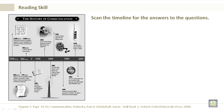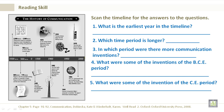Now, let's scan the timeline for the answers to the questions below. What is the earliest year in the timeline? That would be 3,500 BCE, all the way over to your left. Which time period is longer? The BCE time period encompasses over 3,500 years. In which period were there more communication inventions? That would be after 0, CE.